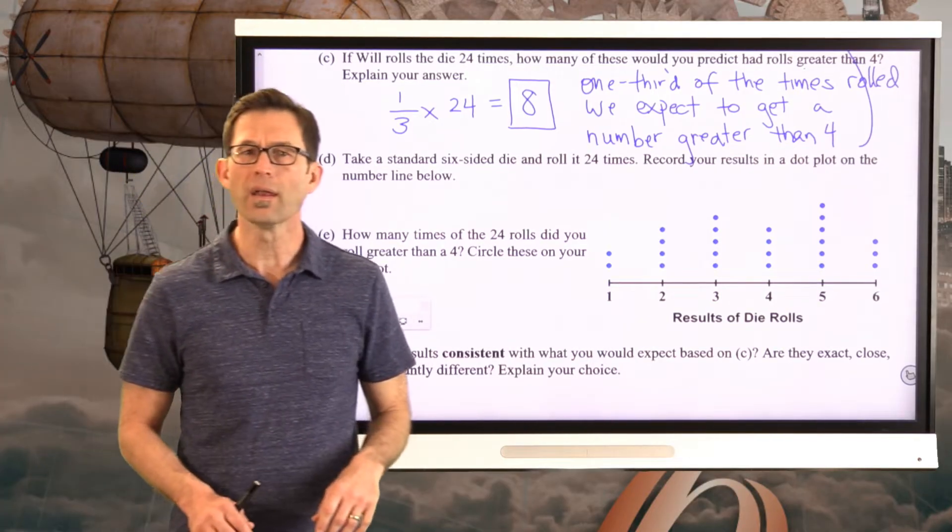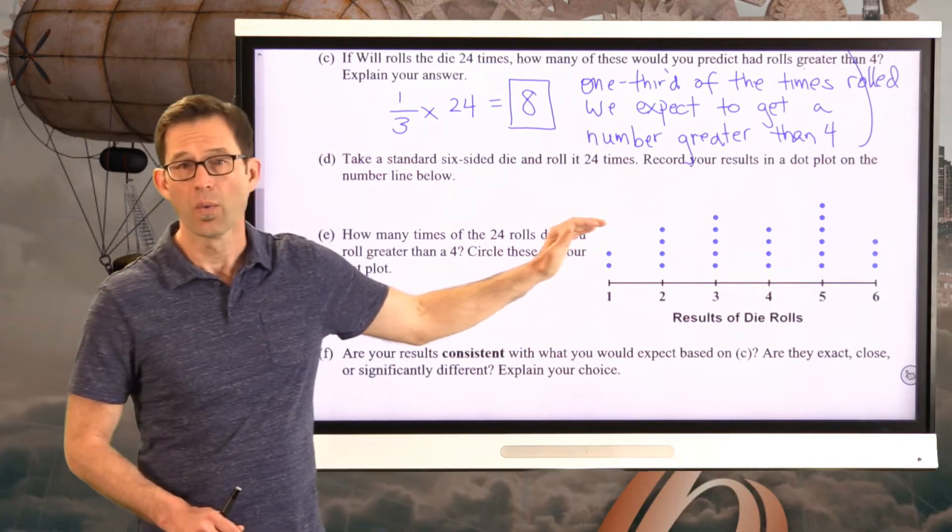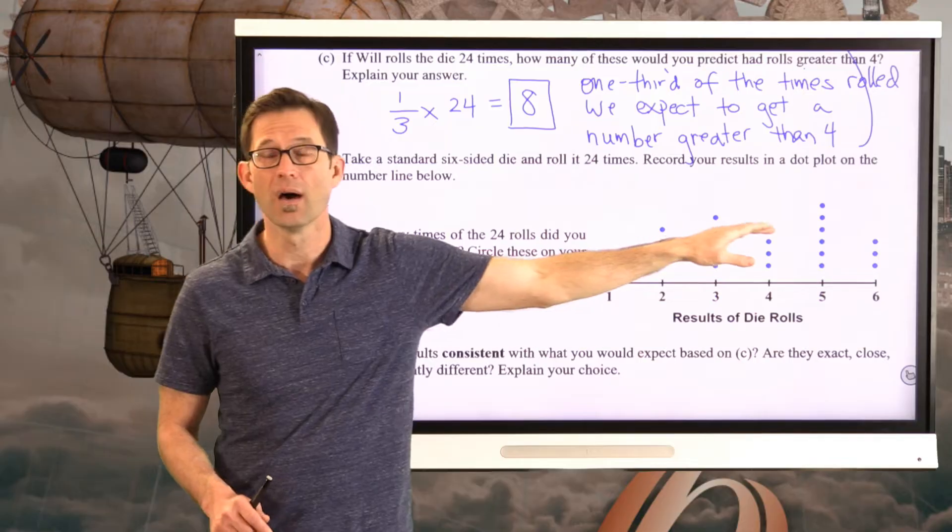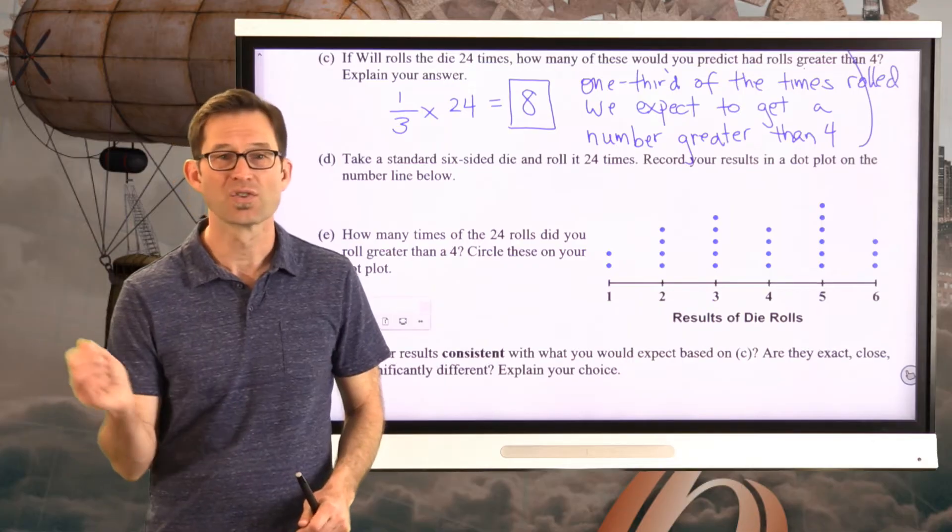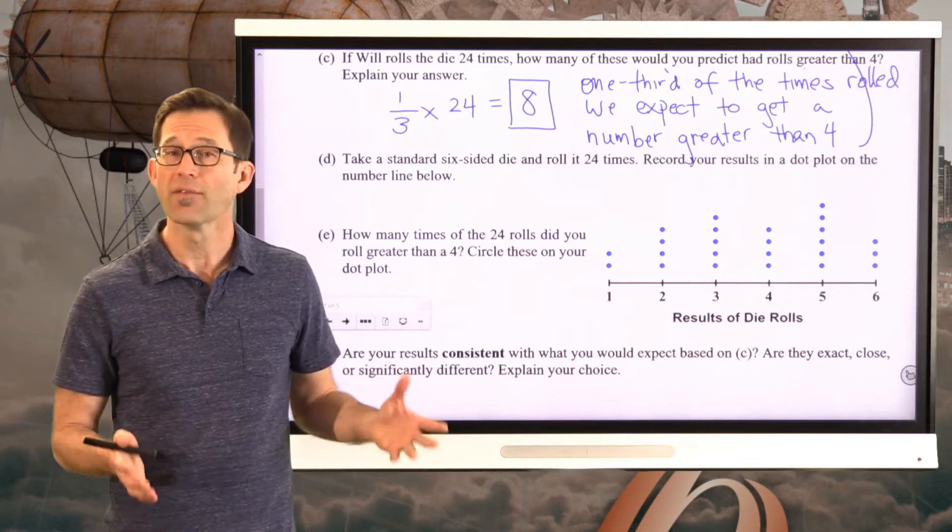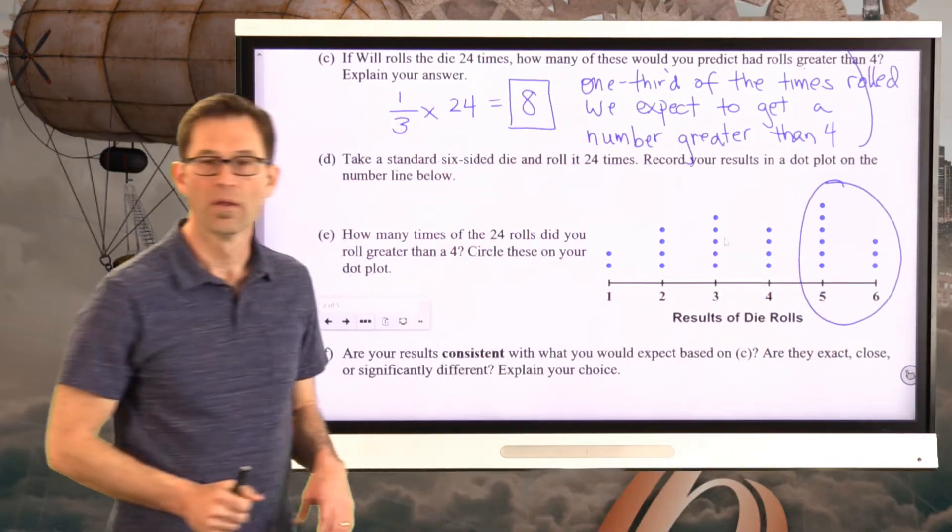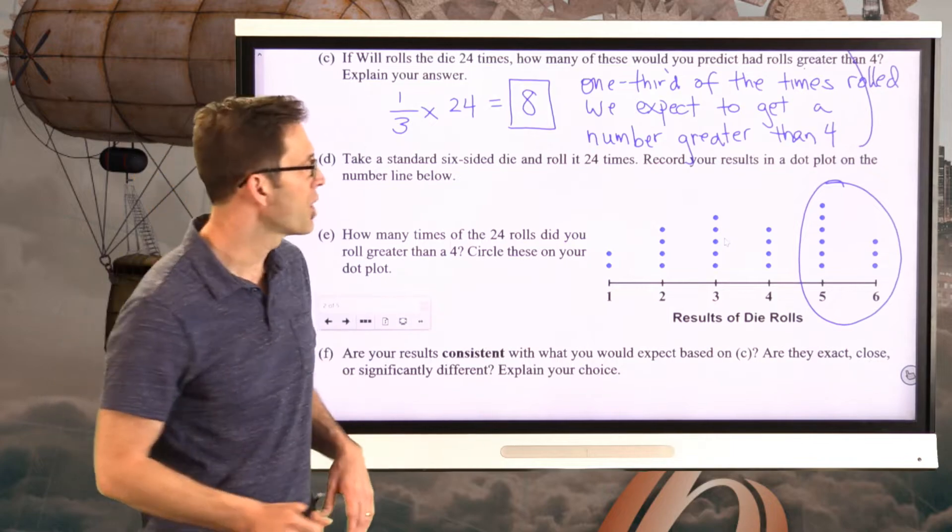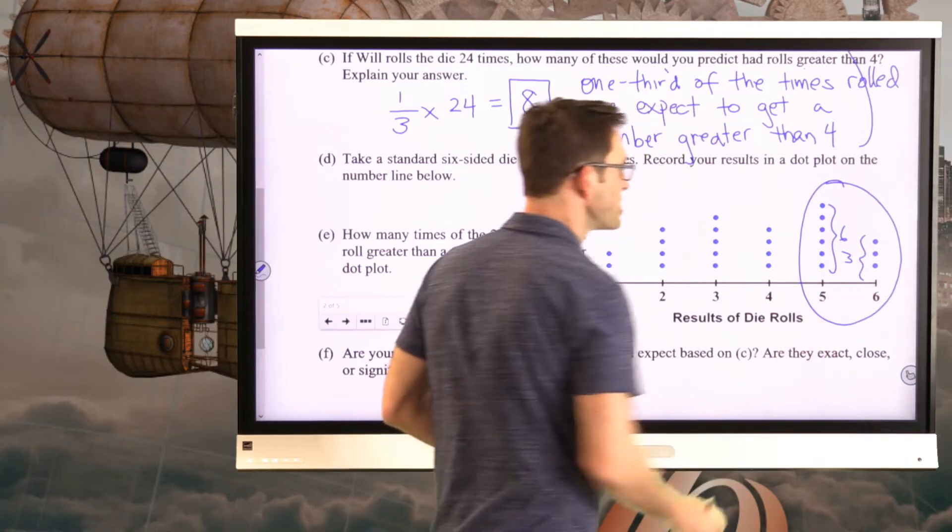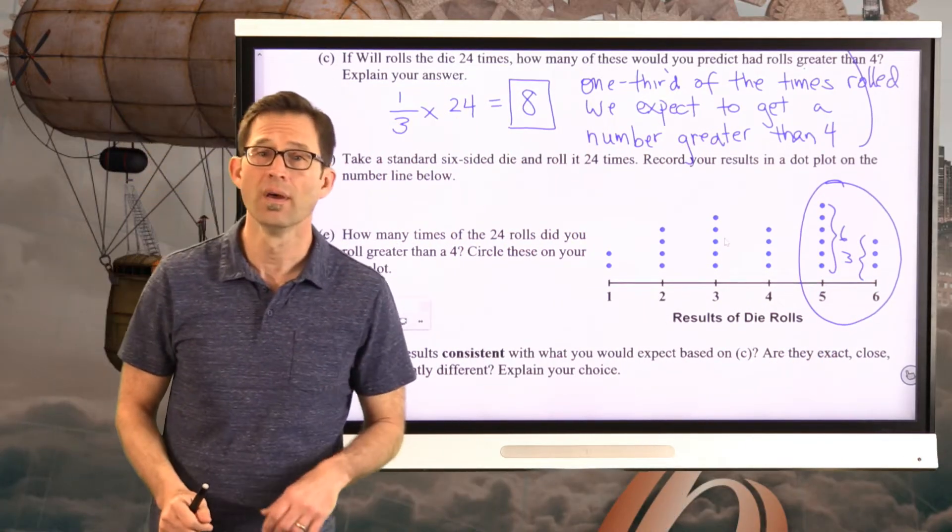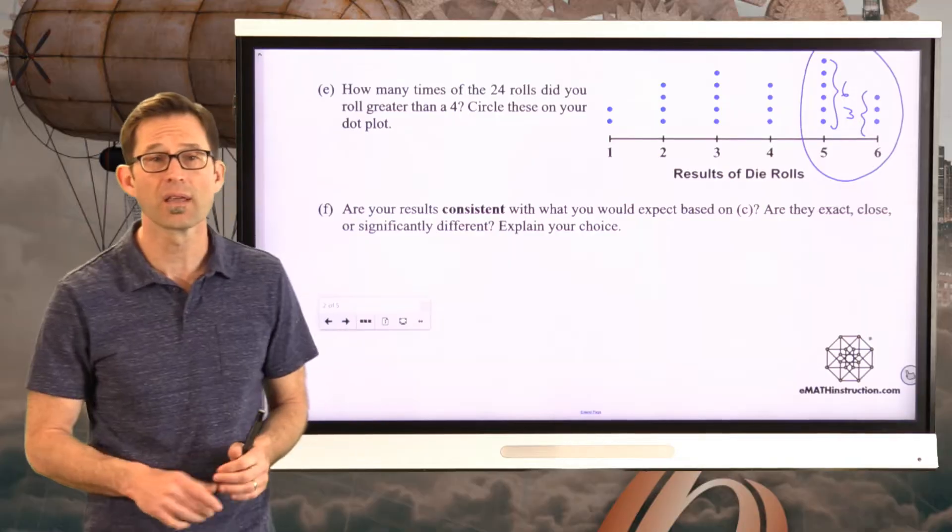But there's chance. Chance means that certain things happen more than other things. And if I look at my dot plot, all the numbers that were greater than four are right there. I ended up rolling six fives and three sixes. Letter F, and again you'll have to answer this for yourself, let's take a look.